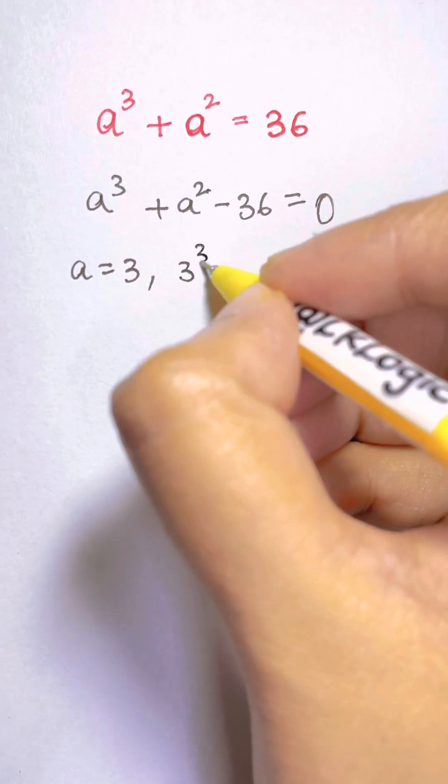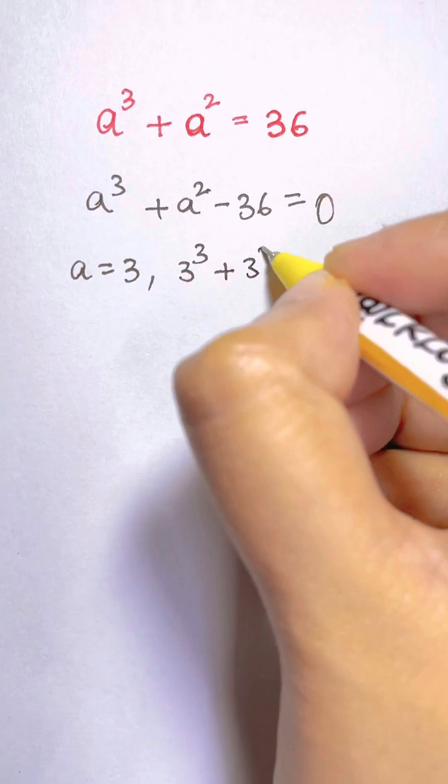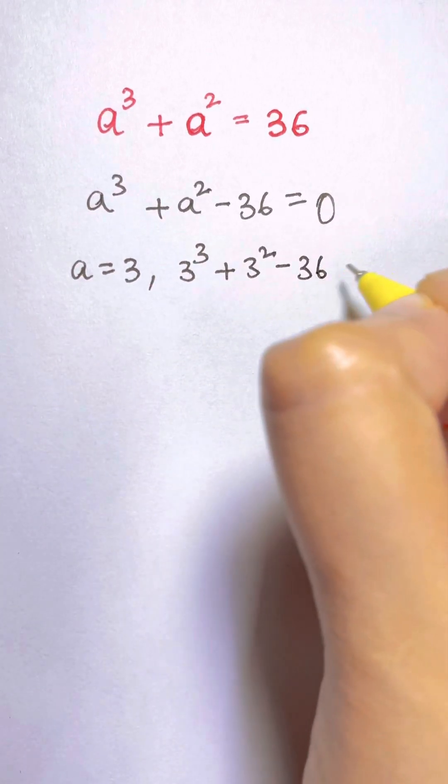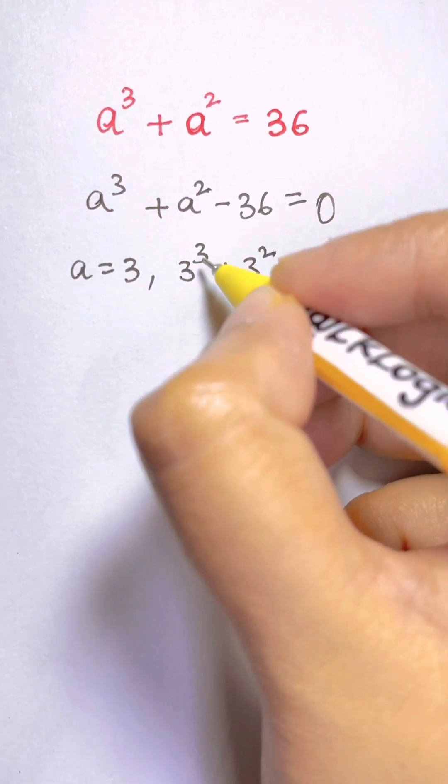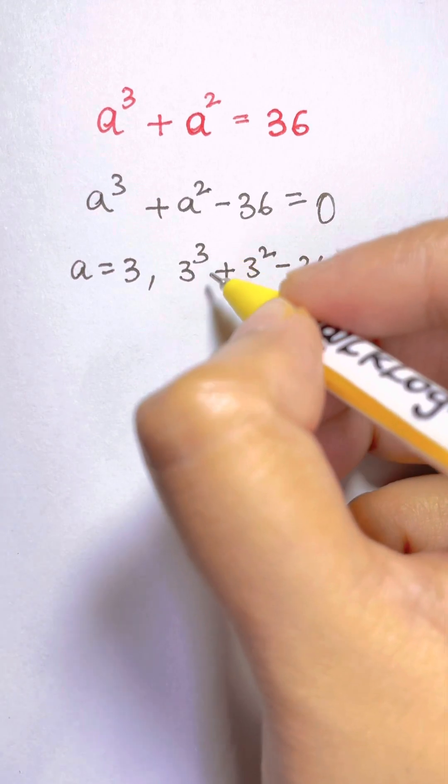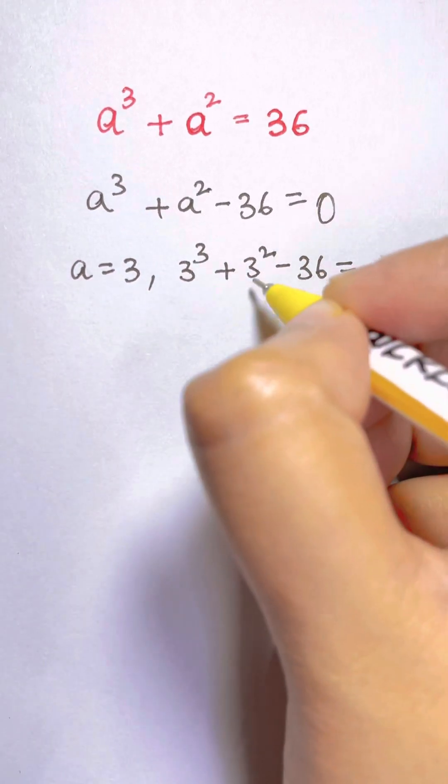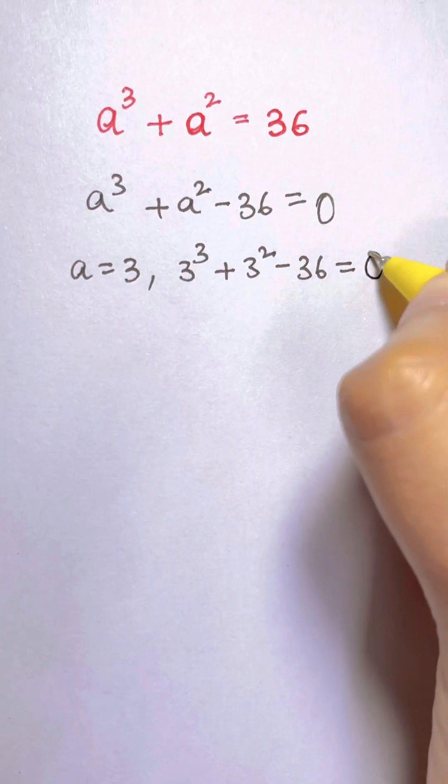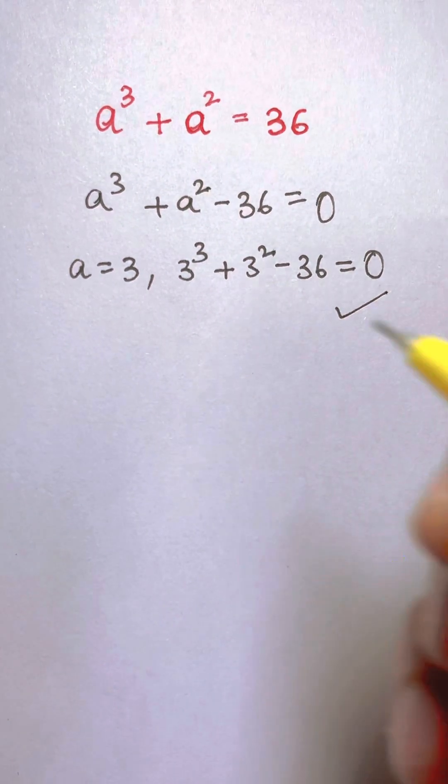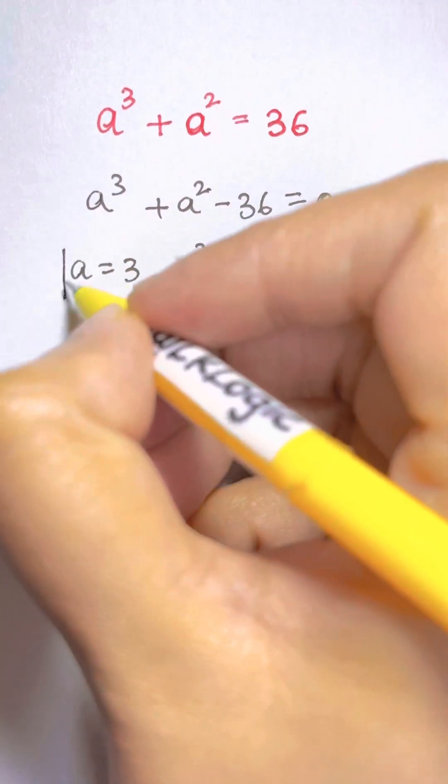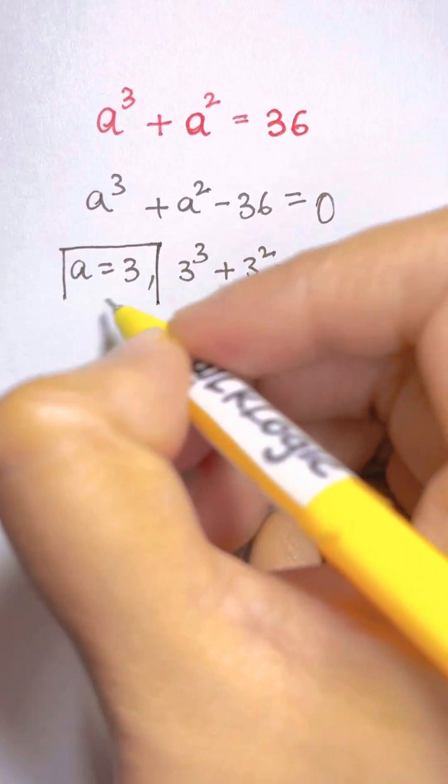So let's substitute. 3³ + 3² - 36 is equal to 3 times 3, 9 times 3, 27 plus 9 is 36. 36 - 36 is 0. So that's right. So a = 3 is one factor.